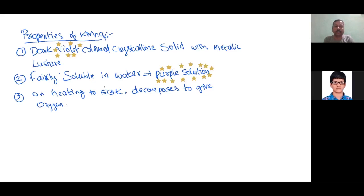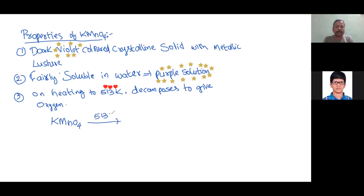On heating to 513 Kelvin, KMnO4 decomposes. At 513 Kelvin, KMnO4 converts into K2MnO4 (potassium manganate), liberating pyrolusite ore (MnO2) back, and oxygen. This shows that potassium permanganate is an oxygen-rich compound. There was an integer-type question asking how many of the following are oxygen-rich compounds — meaning which compounds can evolve oxygen upon thermal decomposition.